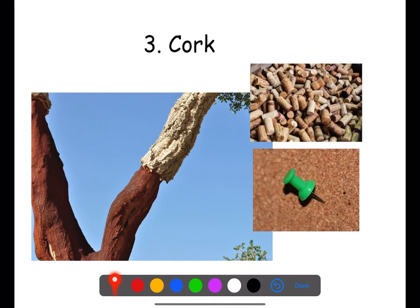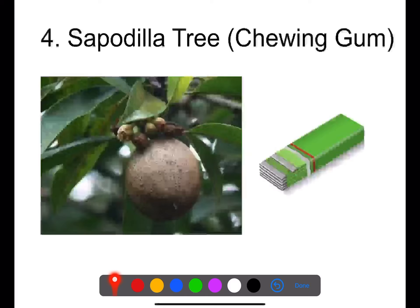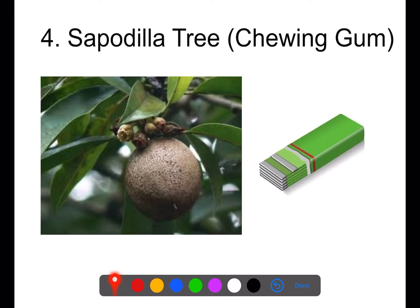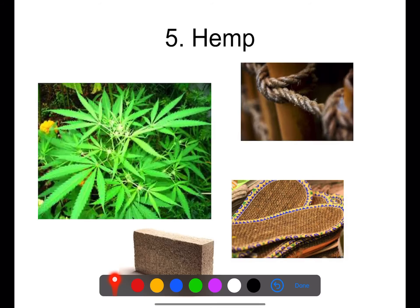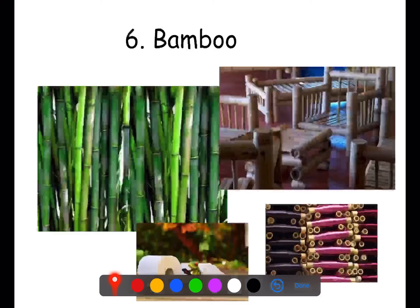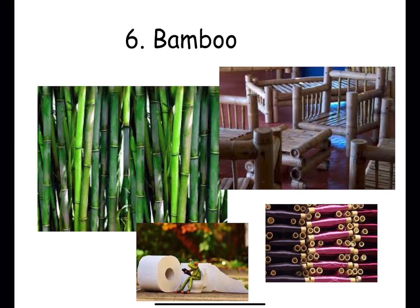Plant number three was a cork tree — we can use cork to make corks for bottles or for pinboards. Plant number four was the sapodilla tree, which is used to make chewing gum. Plant number five is hemp, which can be used to make fibres spun into rope or clothing, and can also be used to make concrete for bricks. Our final plant was bamboo, which can be used to make furniture, spun into fibres for clothes, or made into paper and used for toilet paper.